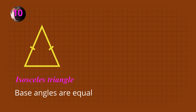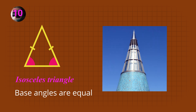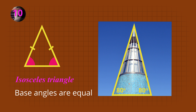In this isosceles triangle, two sides are the same length. Can you see that the two base or bottom angles are also the same size? In this building, if one of the base angles is 80 degrees, the other base angle is also 80 degrees.